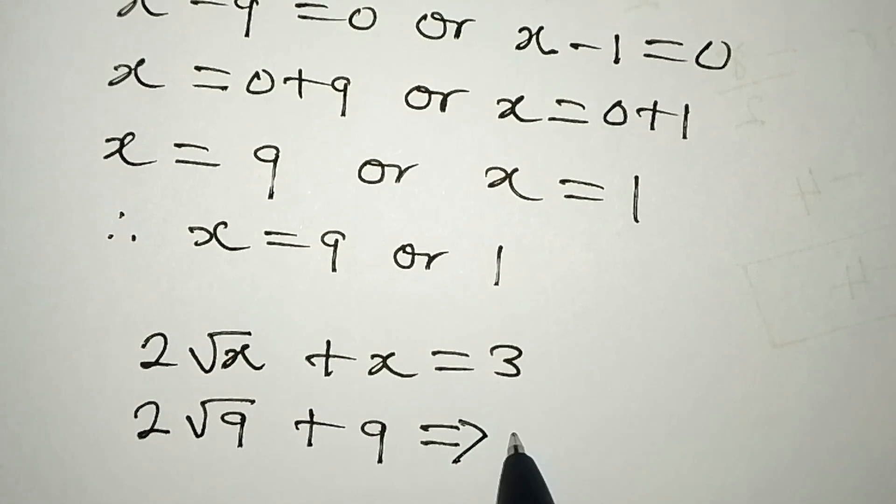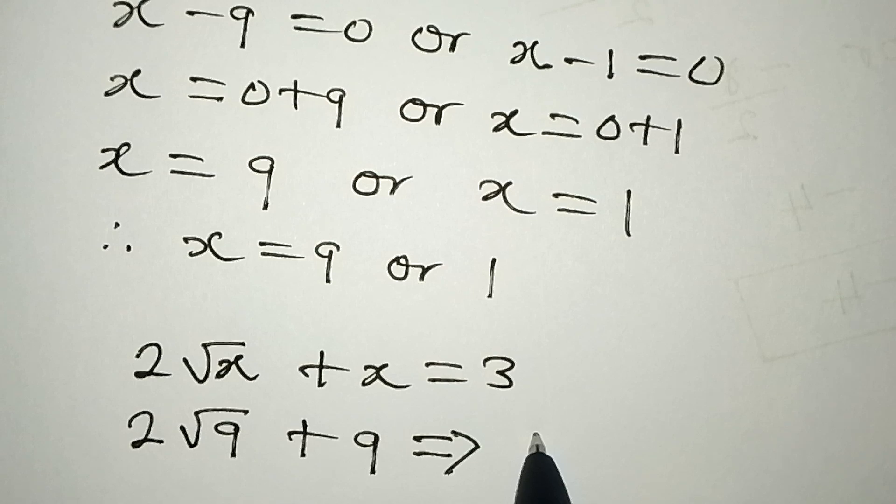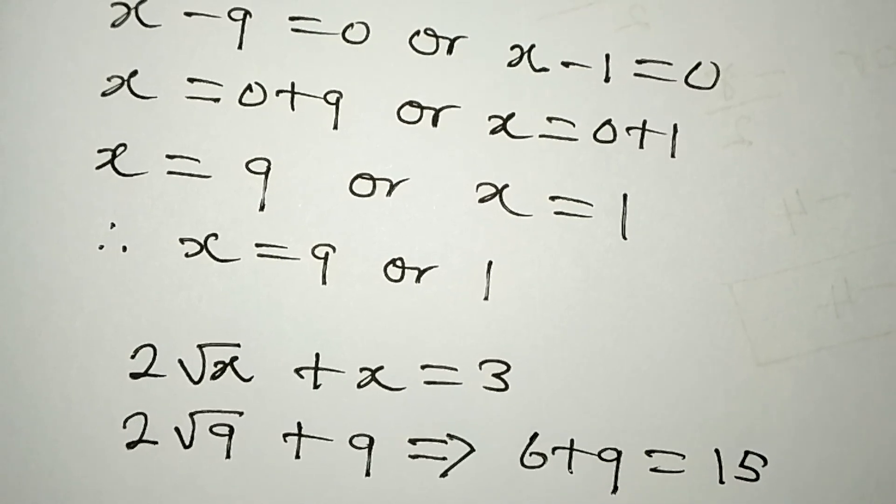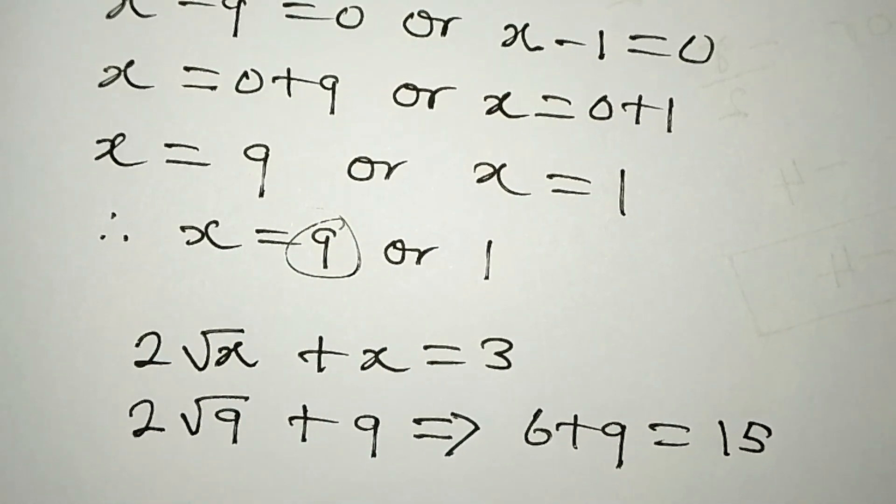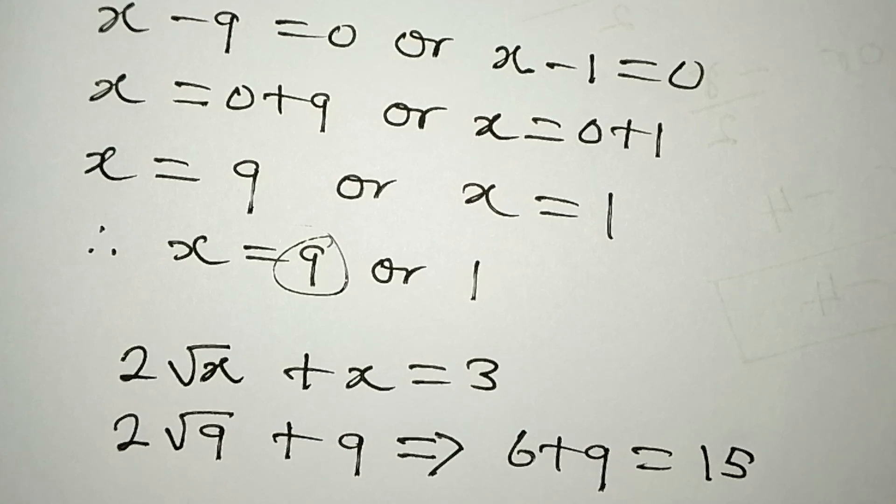√9 = 3, and 3 × 2 = 6, so we have 6 + 9 = 15. This means x = 9 does not satisfy the equation.